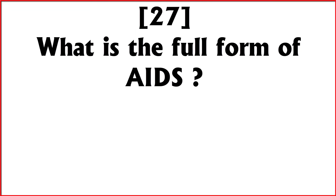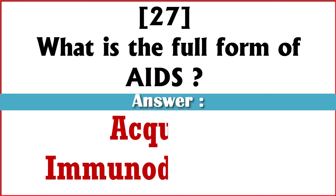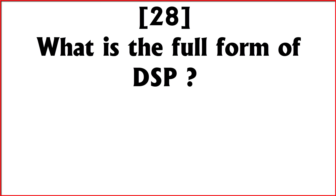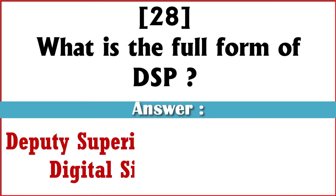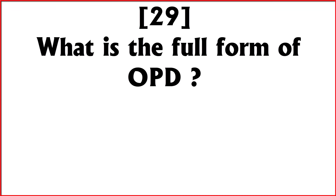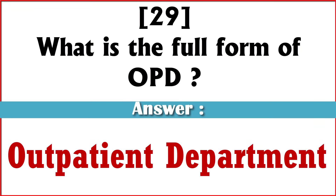What is the full form of AIDS? Acquired Immunodeficiency Syndrome. What is the full form of DSP? Deputy Superintendent of Police or Digital Signal Processing. What is the full form of OPD? Outpatient Department.